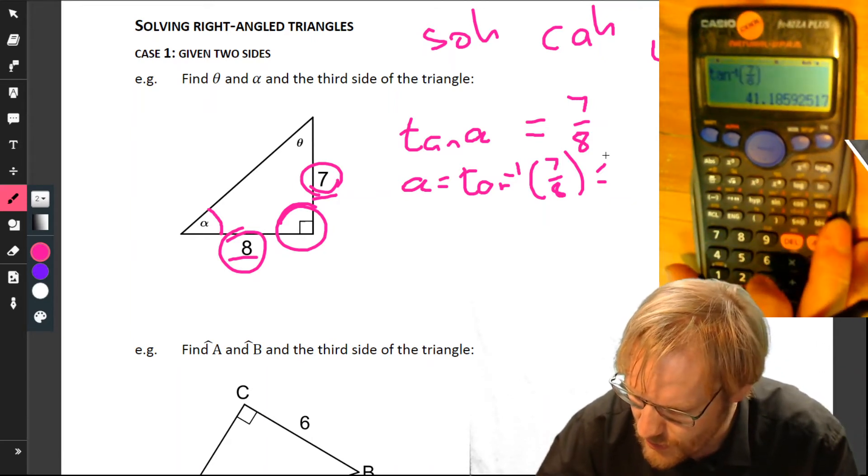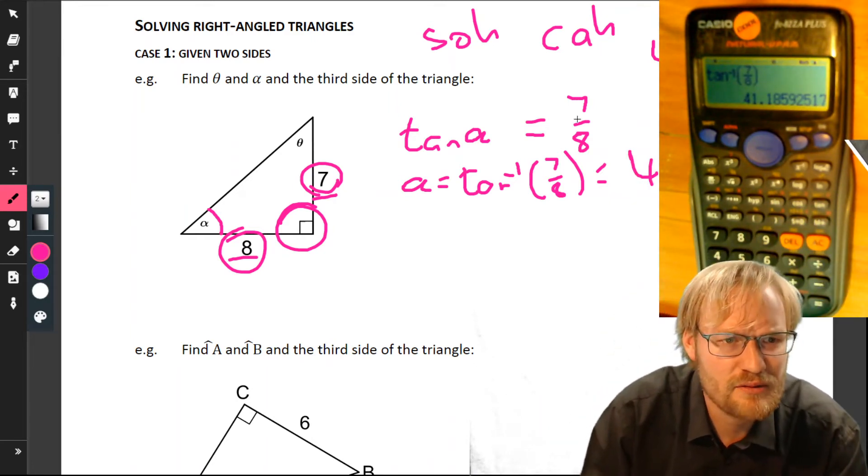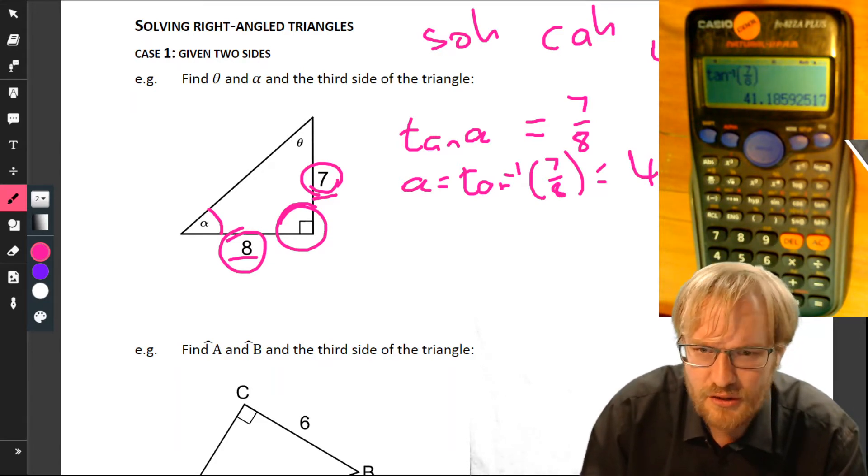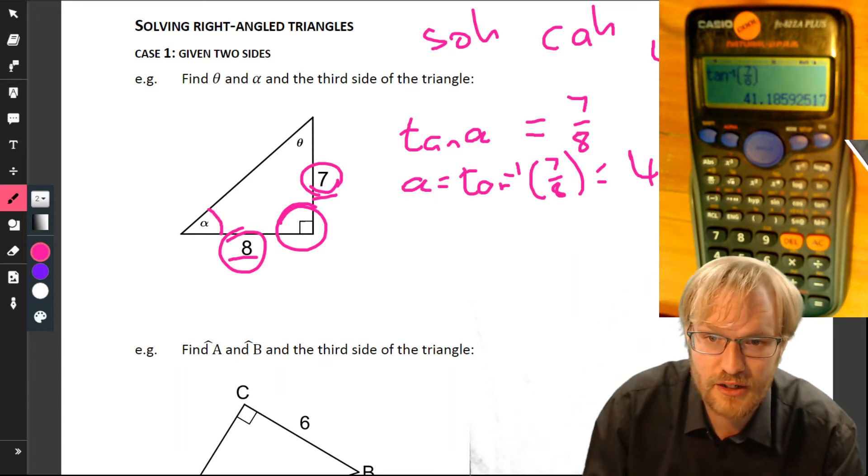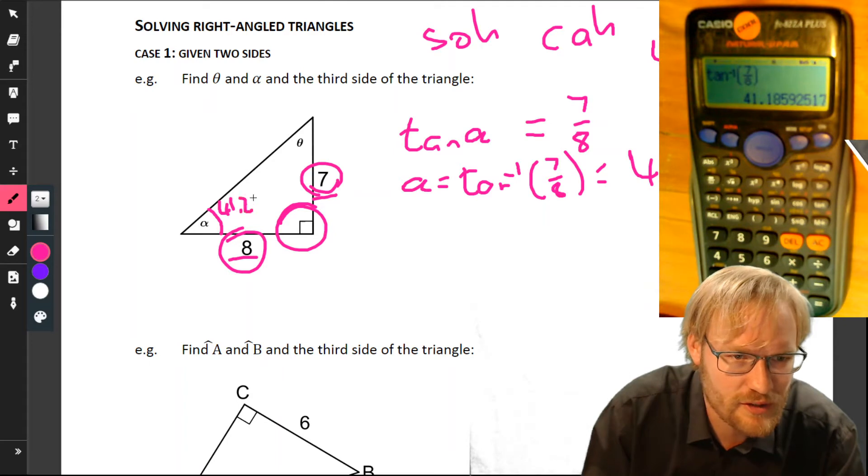Calculator: shift, tan, because we're finding an angle, 7 over 8. Let's just close our bracket so it's all looking good, and we get 41.2. Let's go for one decimal place all around. So we've got 41.2 degrees.